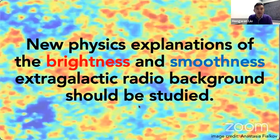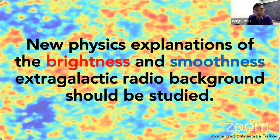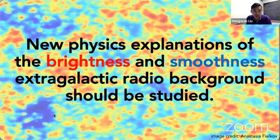Each astrophysical explanation has problems reproducing the smoothness, brightness, or power law. This should be convincing that you might be interested in new physics explanations for the extragalactic radio background, especially its brightness and smoothness. That's the summary of the first part of the talk; in the next part I will start discussing new physics explanations.